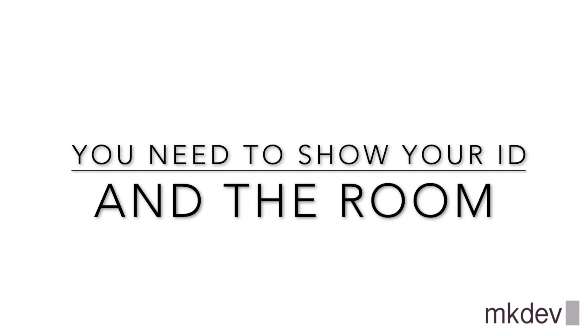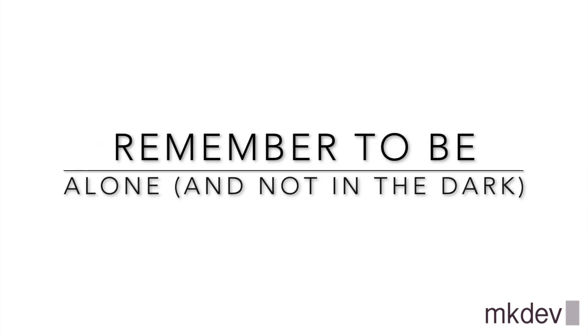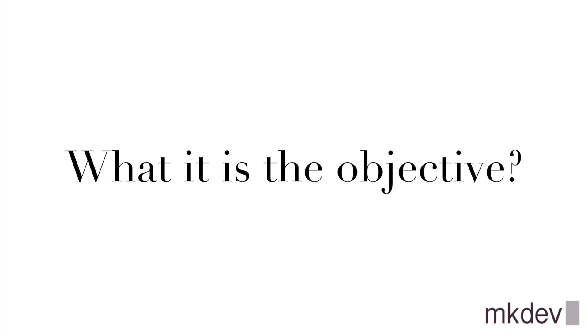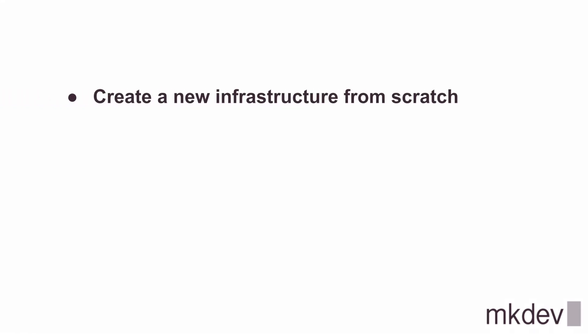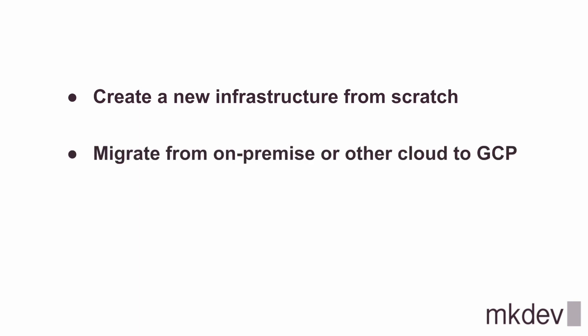Before the exam, this person will ask you to show your ID and the entire room where you are doing the test. So remember to be alone and don't hide anyone under the table, because you even need to show that part of the room. Now, the idea of this certification is to help an architect execute one of three scenarios: create a new infrastructure from scratch, migrate an infrastructure from an on-premise environment or another cloud to GCP, or improve a current infrastructure in the cloud or a hybrid scenario.